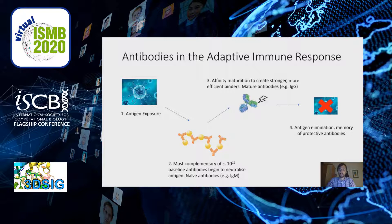I'll start with some background information to make the talk easier to follow. The first step in the adaptive immune response is that we're exposed to an antigen. Our baseline antibody repertoire, which acts as our first responder antibodies, will have a certain proportion complementary enough to a protein on the antigen surface to initiate an immune response. These antibodies won't immediately be of sufficient affinity to clear the antigen, so the B cells that encode them migrate to the lymph nodes where affinity maturation tailors them to yield stronger, more efficient binders.